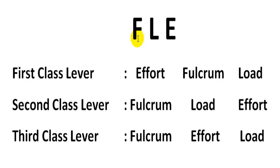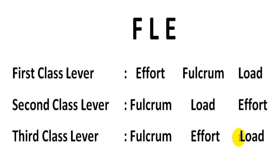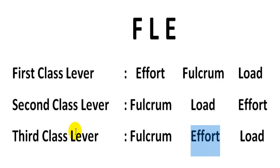To remember: look at the letter F for first class lever — Fulcrum is always in the middle. For second class lever, the second letter L means Load is in the middle between fulcrum and effort. For third class lever, the last letter E means Effort is in the middle between fulcrum and load. So using the FLE trick: in first class the Fulcrum is in the middle, in second class the Load is in the middle, and in third class the Effort is always in the middle.